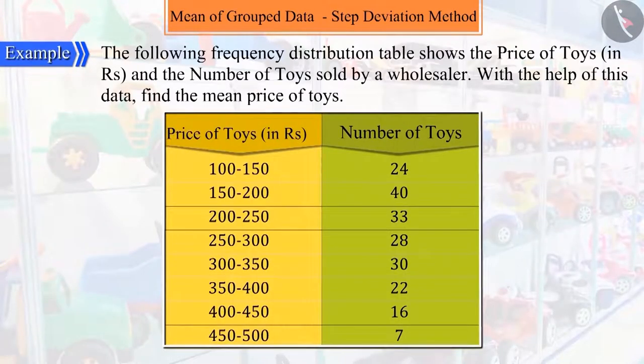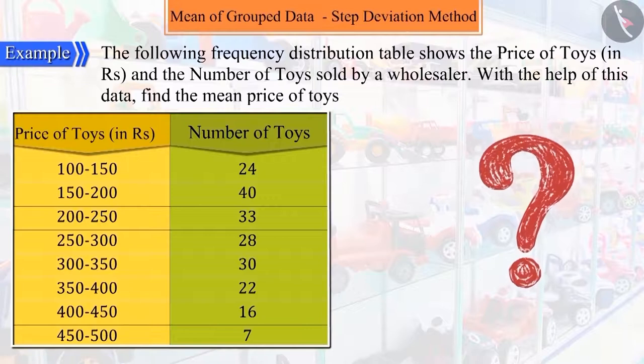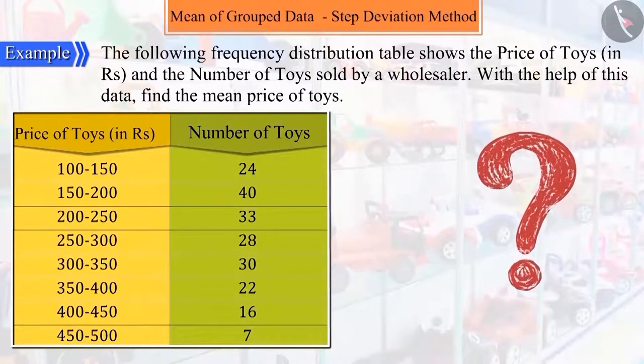The following frequency distribution table shows the price of toys and the number of toys sold by a wholesaler. With the help of this data, find the mean price of the toys. Let's see.